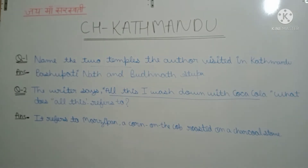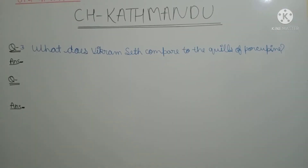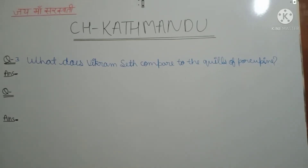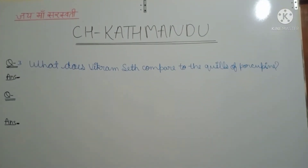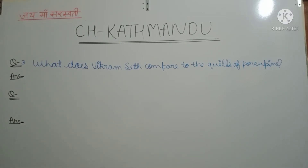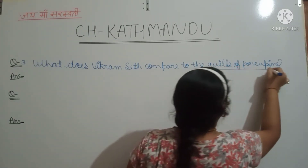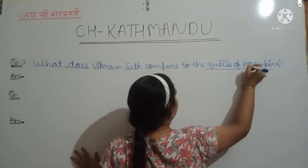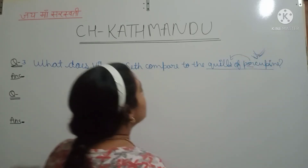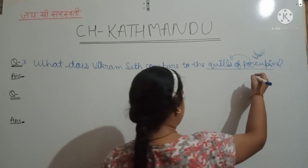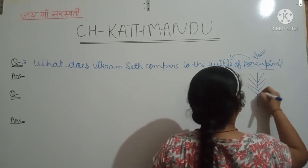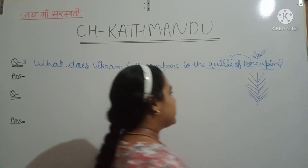Let's do the next question. Our third question: what does Vikram Seth compare to the quills of a porcupine? The word 'quills' — quills of the porcupine. He compares the quills to something protruding.